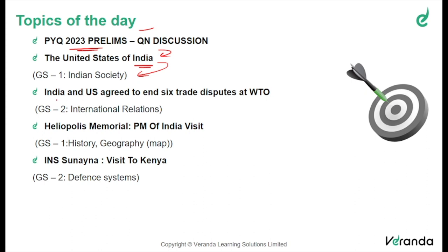After which we'll be moving to the next topic: India and U.S. agreed to end six trade disputes at the World Trade Organization, which can be mapped to GS2 international organizations. The next topic is about the Heliopolis Memorial and the PM of India's visit, which can be mapped to GS1 history, as well as probable questions from geography mapping. Then we'll be discussing about INS Sunayana, which can be mapped to GS2 defense systems.